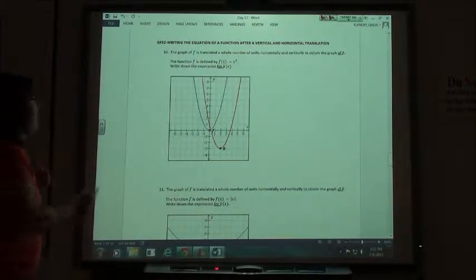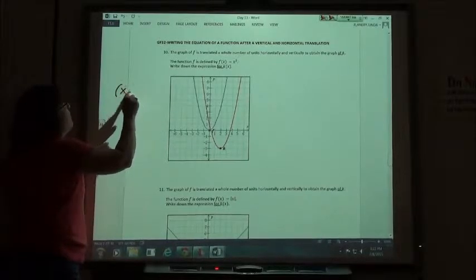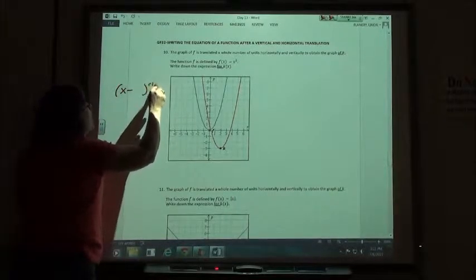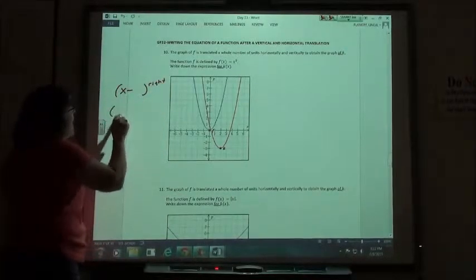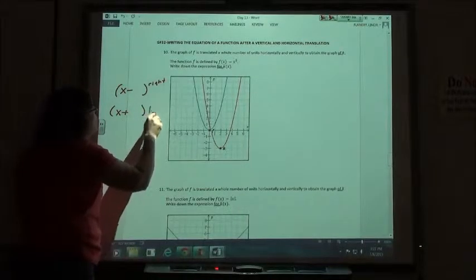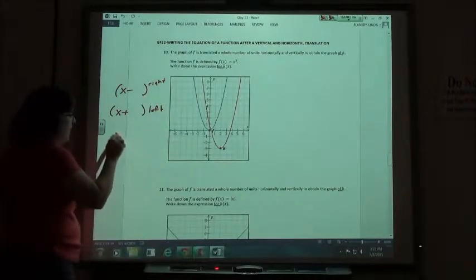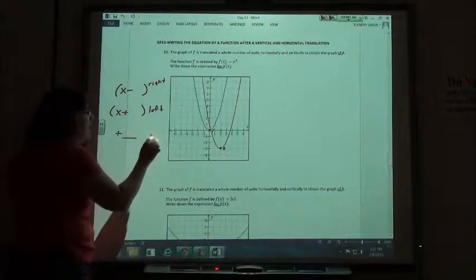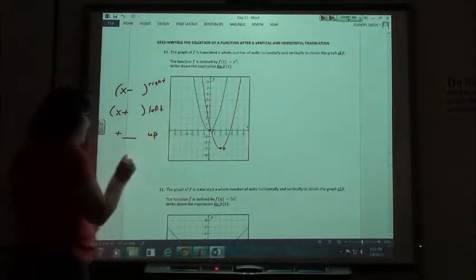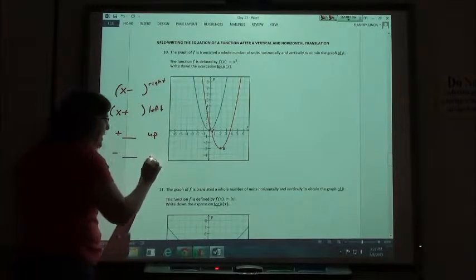So keep in mind that if I have x minus something, it went to the right. If I had x plus something, it went to the left. If I had a plus number on the end, it went up. And if I had a minus number on the end, it went down.